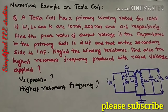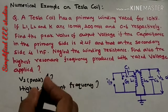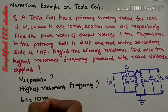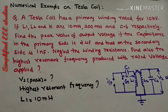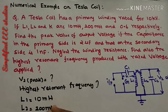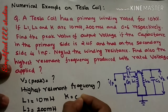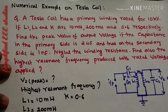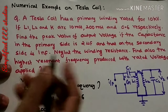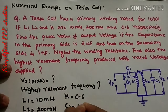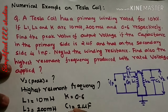First, note down the given data. L1 is 10 mH. L2 is 200 mH. The coefficient of coupling K is equal to 0.6, or 60 percent. The primary side capacitance C1 is equal to 2 microfarad, and the secondary side capacitance C2 is equal to 1 nanofarad. Please note all the values carefully.